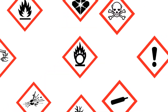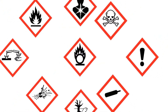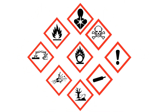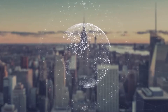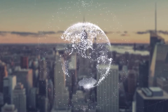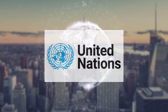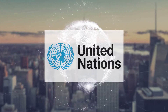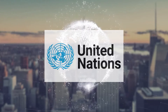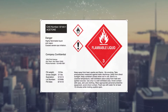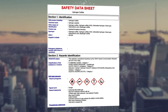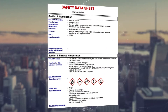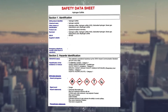Canada has aligned WHMIS with the Globally Harmonized System of Classification and Labeling of Chemicals, GHS. GHS was developed by the United Nations to establish globally a common set of rules for classifying hazardous products, labels, and a standard format for Safety Data Sheets, or SDSs, formerly known as Material Safety Data Sheets, or MSDSs.